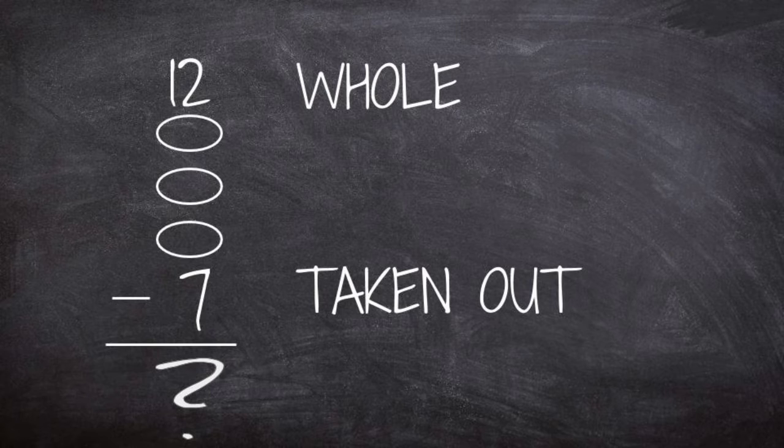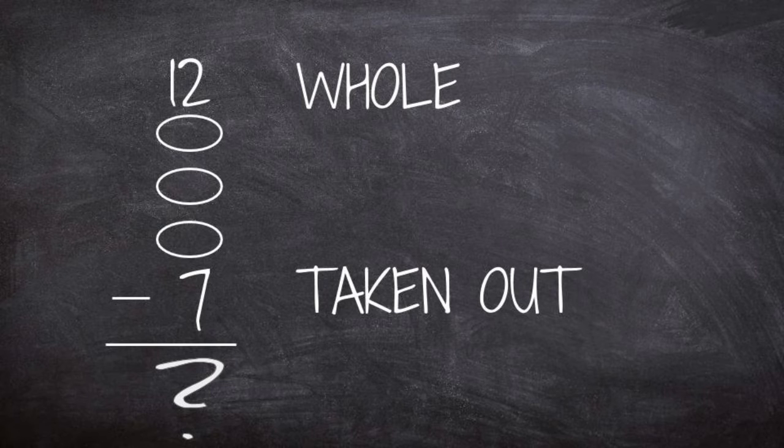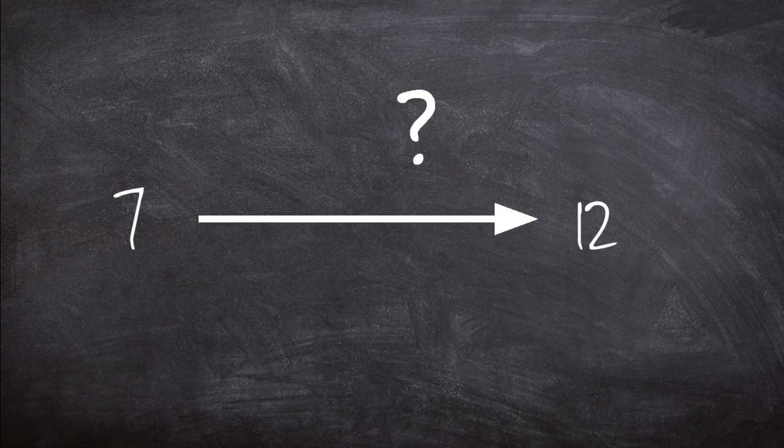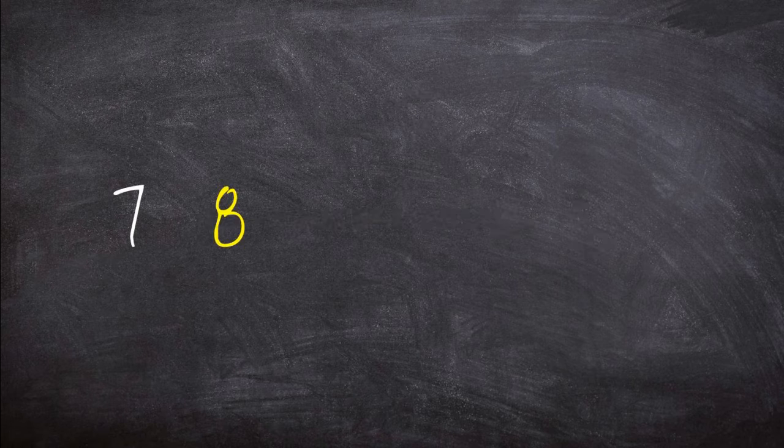So, let's look. How do we figure out 7 to 12? Well, we count up. 7, next number is 8, 9, 10, 11, 12.